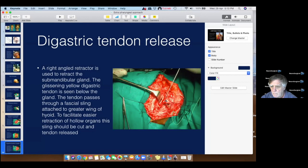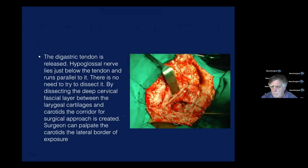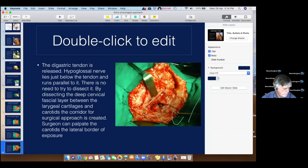If you cut the facial sling, the digastric tendon becomes loose and can be retracted out. When you go deeper and deeper you may need more retraction, facilitated by cutting that sling. The facial sling attached to the greater wing of the hyoid should be cut and the tendon released to facilitate easier retraction of the hollow organs. Just below the digastric tendon you can see the hypoglossal nerve running parallel to it — there is no need to dissect it, just leave it.